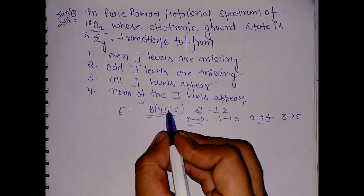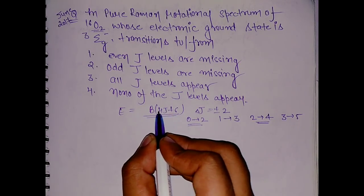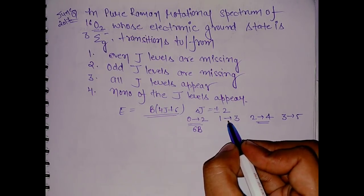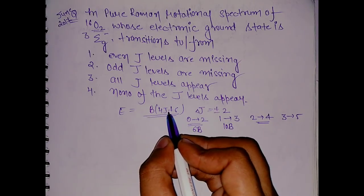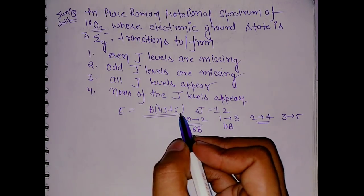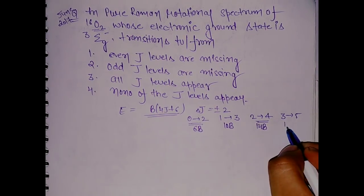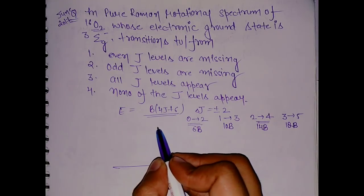The one which was coming when we substitute 0 we will get 6B, and from here we will get 10B. From 4 to 8, 8 and 6 is 14, this is 14B, and similarly it is 18B. In the spectra when we make a spectra...